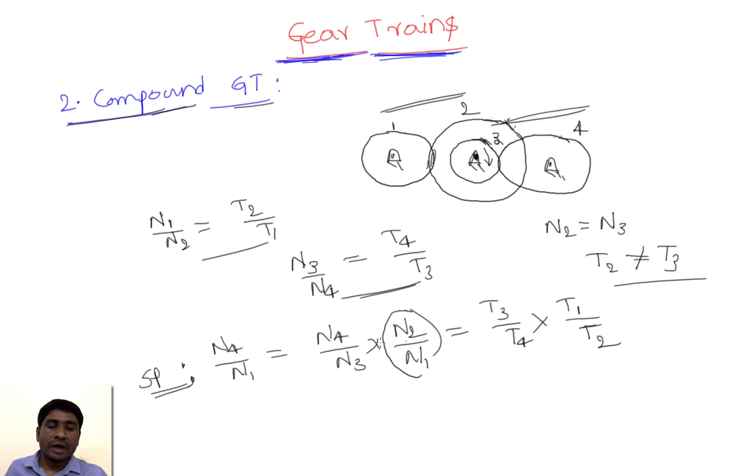But we know N3 equals N2 because these two gears are on the same shaft, so these will cancel. Then we get N4/N1, which is the speed ratio, equal to (T1 × T3)/(T2 × T4). Here all gear teeth are present in the formula.